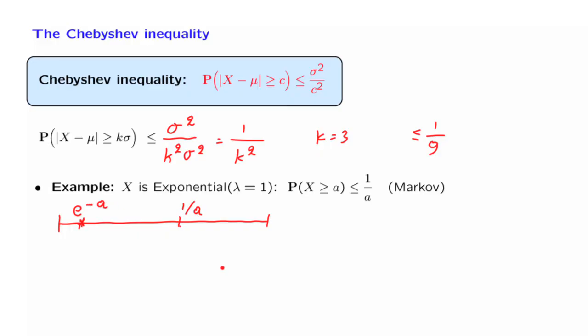Let us see what we can get using the Chebyshev inequality. Now, our random variable has a mean of 1. Let us assume that a is bigger than 1, so that we're considering an event that we fall far away from the mean by a distance of at least a minus 1.